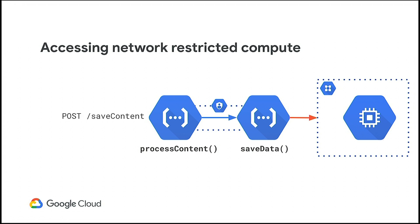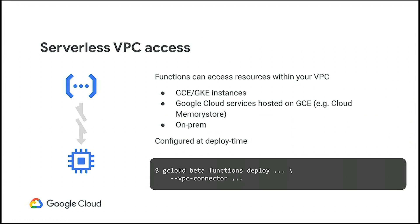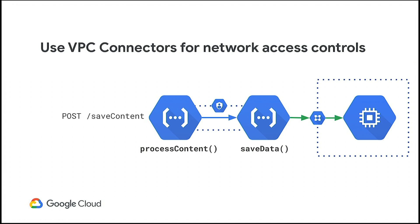Maybe you're running a database that doesn't integrate well with Cloud IAM but is within a VPC. VPC connectors are now in beta and allow you to talk to instances within a VPC — GCE or GKE, Cloud Memorystore, and even on-prem through compute running in that VPC. You configure it at deploy time: `gcloud functions deploy` with a VPC connector flag, letting you go through that connector to that compute.